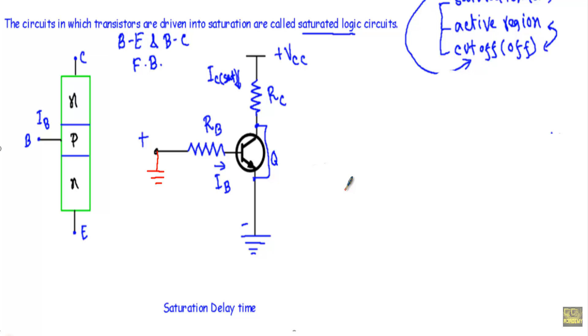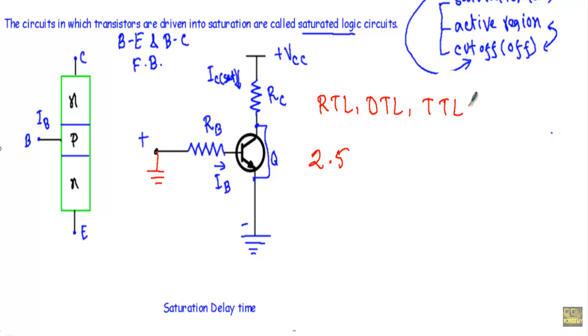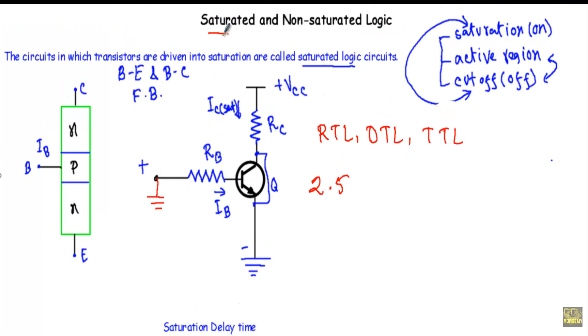Because of this saturation delay, non-saturated logic circuits like ECL and Schottky TTL logic circuits are 2.5 times faster than saturated logic circuits like TTL and RTL. Due to this saturation delay or transition delay time, RTL (resistor-transistor logic), DTL (diode-transistor logic), and TTL (transistor-transistor logic) use saturated logic for their logical operation.